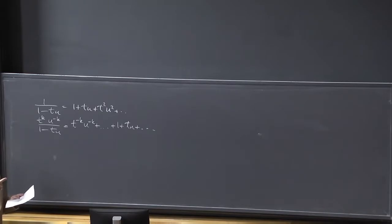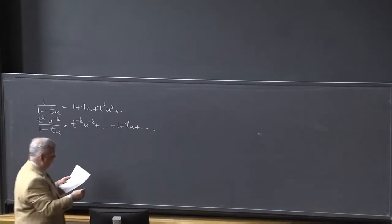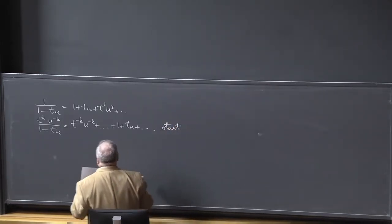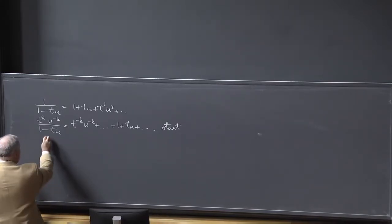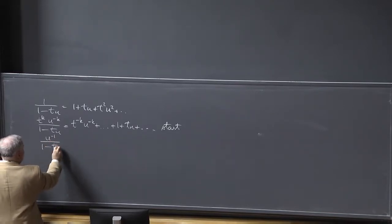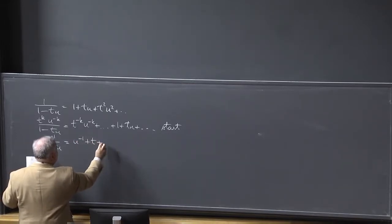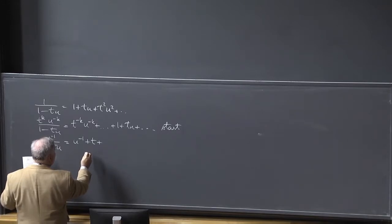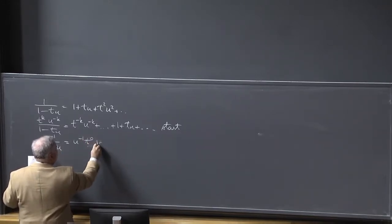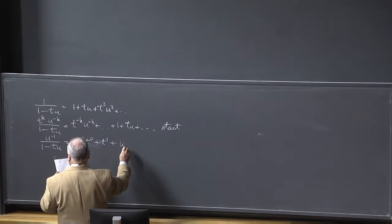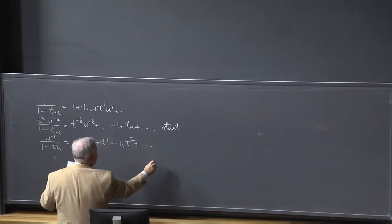So this is a start — you modify the start. And we'll use another thing: if you multiply by U inverse over one minus TU, this is going to be U inverse plus T — that is, U inverse times T to the zero, plus T to the one, plus U T to the two, and so on. So here you have done a shift of the series.